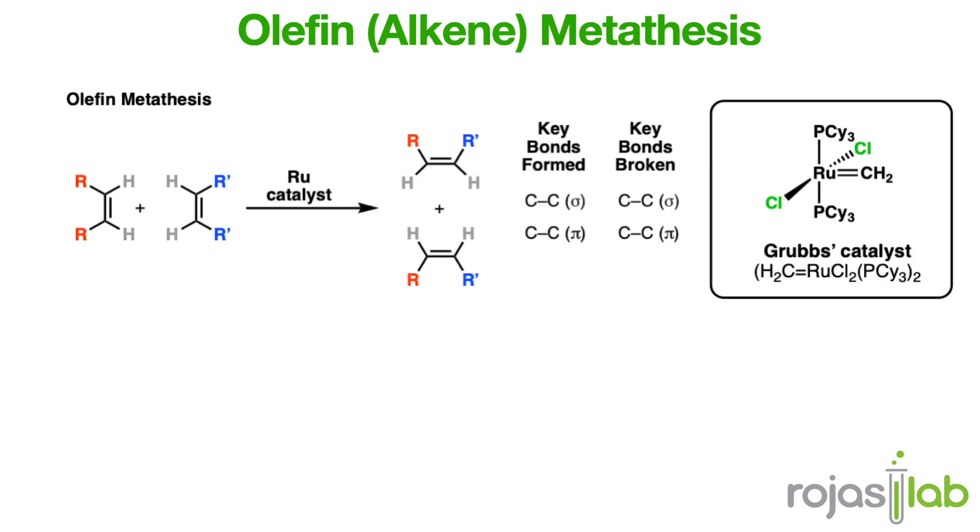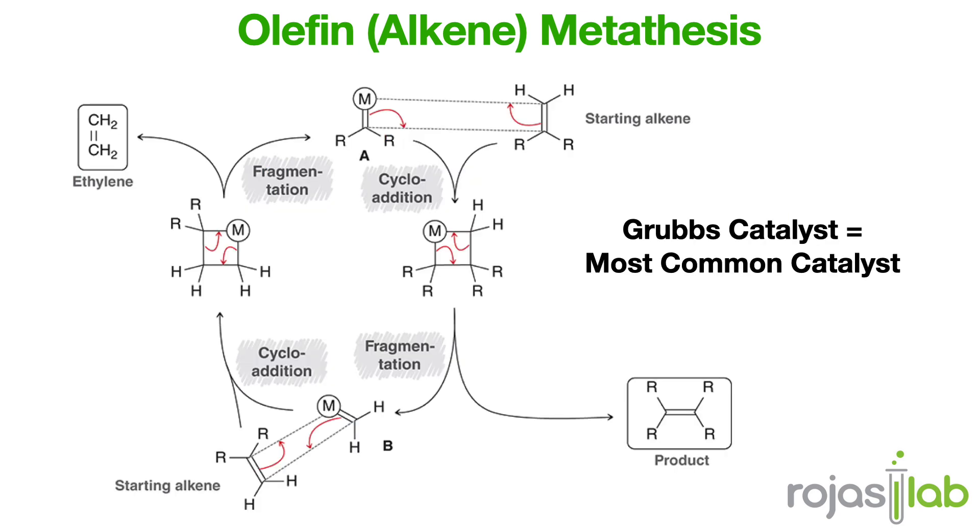Last but certainly not least, we have alkene, or sometimes referred to as olefin, metathesis, a fascinating reaction that rearranges carbon-carbon double bonds through the action of metal-carbene complexes. Within the catalytic cycle of olefin metathesis, a metal-carbene intermediate is generated upon coordination of the alkene to the metal center. This metal-carbene species undergoes a series of intramolecular rearrangements, including alkylidene transfer and metallacyclobutane formation, culminating in the exchange of double bonds between alkene substrates.